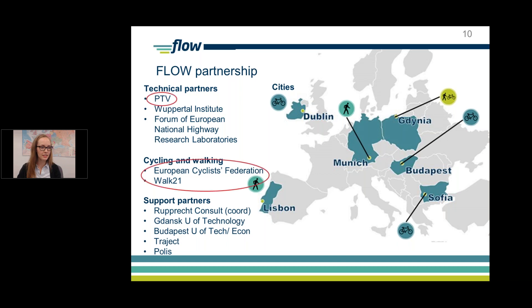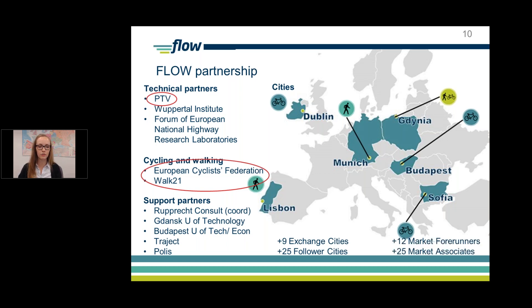What FLOW has achieved is bringing together PTV for the transport modeling side and the European Cyclist Federation and Walk 21 from the policy, walking, and cycling side. In addition to other partners and partner cities, we've also brought in nine exchange cities, 25 follower cities, and representatives from consultancies who have been working with the FLOW tools and learning more about them.